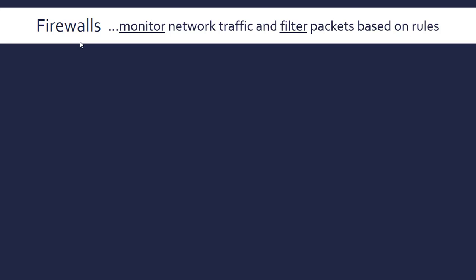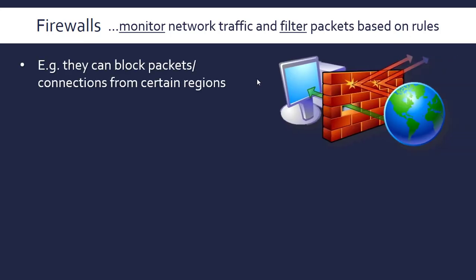A very important tool in internet security is the deployment of firewalls. A firewall will monitor network traffic and filter the data packets coming in or going out based on certain rules. For example, you might want to block packets coming from a certain region — some regions are more prone to hacking, East Asia especially. The firewall will allow in some traffic and block other traffic based on rules you've set.